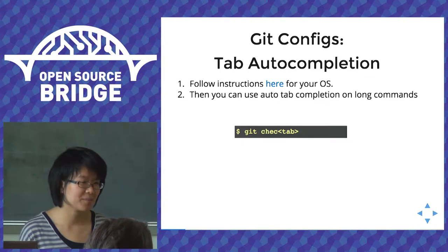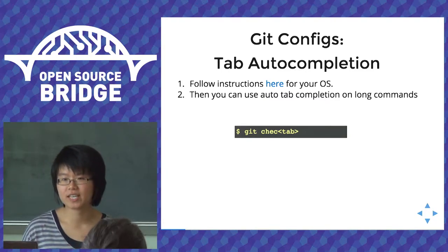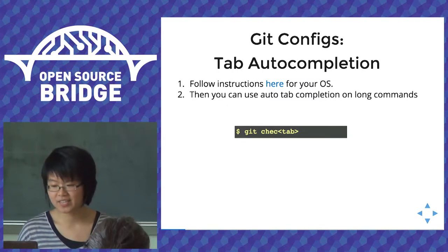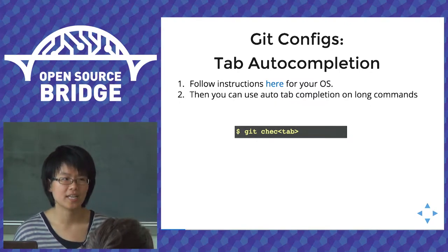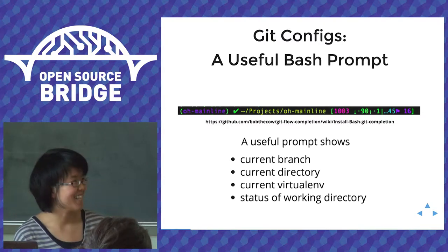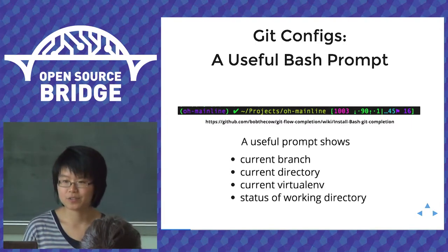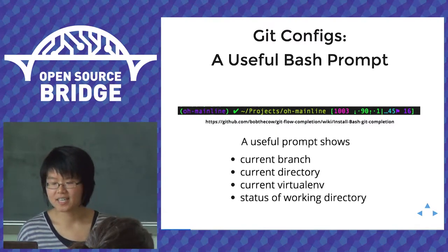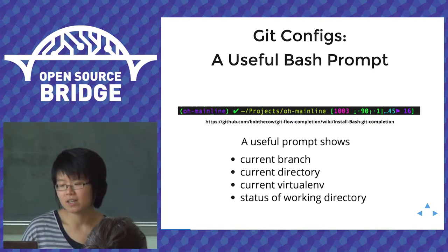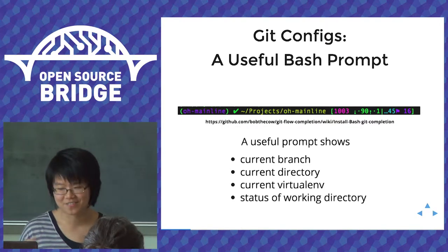Eventually you'll run into really long branch names, and this is when you can put in a tab auto-completion bash script into your bash RC. The instructions for setting this up are different for every operating system, but once set up, you can go into any Git directory and do auto-tab completion on any Git command or branch name. You can also make your bash prompt more useful — showing the current branch, directory, Python virtual environment, and the status of the working directory by editing the PS1 variable. All of these are useful starting points for configuring your personal Git config.